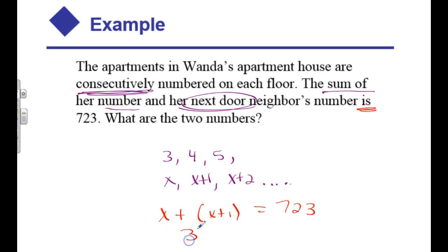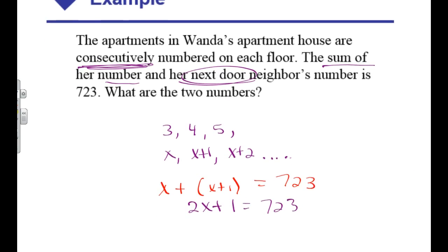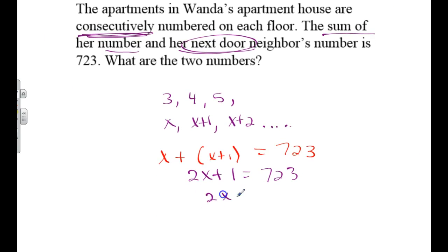So this is a total of 2x. Sorry about that. Oops. I better try an eraser here. I better get a 2x plus 1 is 723. I'll subtract off 1 and I'll divide by 2. 361. Then I'm going to answer the question because I'm not done.